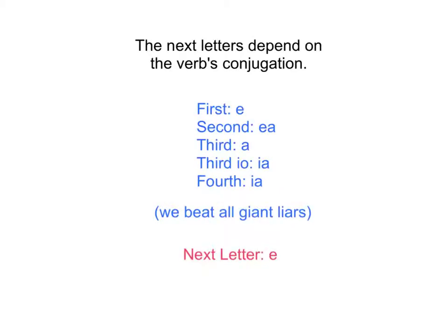Now, the next letters in this form are going to depend on the verb's conjugation. For first conjugation, we use E. For second, we'll use EA. For third, we'll use A. For third IO, IA. And for fourth, IA.